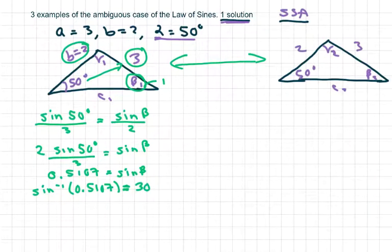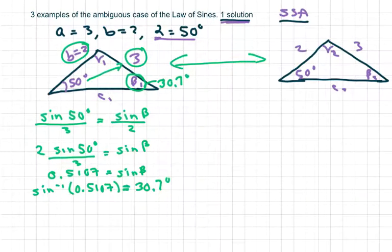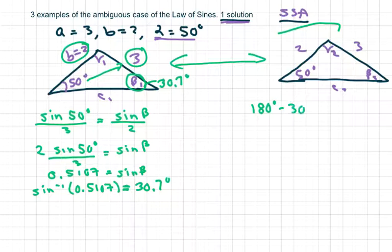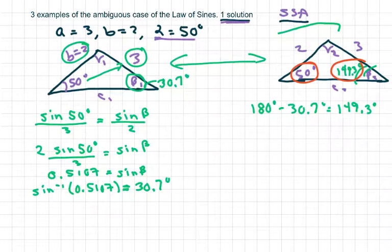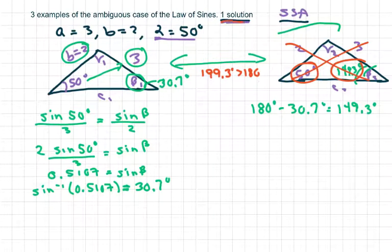This is 30.7 degrees. Now, to see if I have another triangle, I have a visual. So what I'm going to do is take 180 minus 30.7 degrees, and I get 149.3 degrees. So if I had another triangle, this angle here would be 149.3 degrees. And as you can see, when you add these two up, this would be 199.3 degrees, which is greater than 180. That means we don't have two triangles — we only have one. So that means one set of solutions.